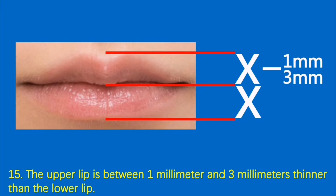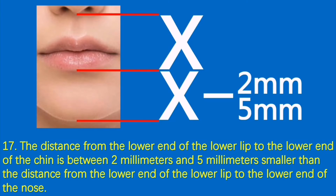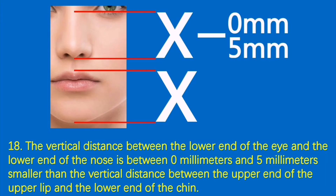Condition 15: The upper lip is between 1 millimeter and 3 millimeters thinner than the lower lip. Condition 16: The vertical distance between the lower end of the nose and the upper end of the upper lip is between 1 millimeter and 2 millimeters larger than the thickness of the lower lip. Condition 17: The distance from the lower end of the lower lip to the lower end of the chin is between 2 millimeters and 5 millimeters smaller than the distance from the lower end of the lower lip to the lower end of the nose. Condition 18: The vertical distance between the lower end of the eye and the lower end of the nose is between 0 millimeters and 5 millimeters smaller than the vertical distance between the upper end of the upper lip and the lower end of the chin.